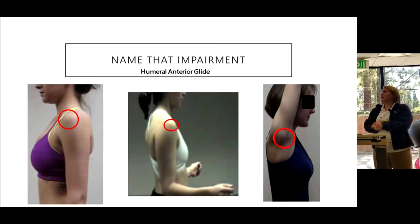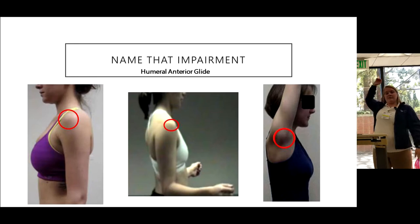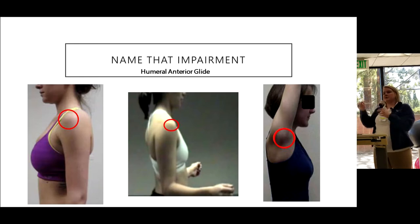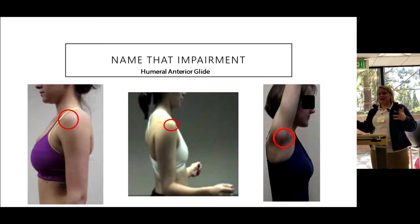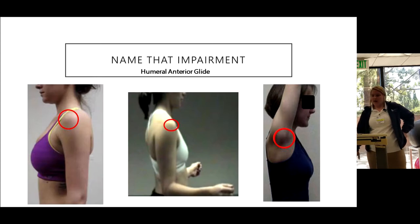Humeral anterior glide is very common in swimmers, volleyball players, pitchers, and people who do a lot of overhead motion with their arm behind them. These are people who need to be excessively mobile in certain positions — especially swimmers who often give here first rather than at their scapular-humeral joints.